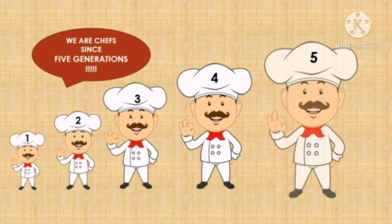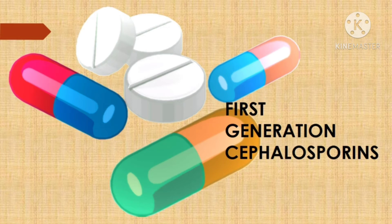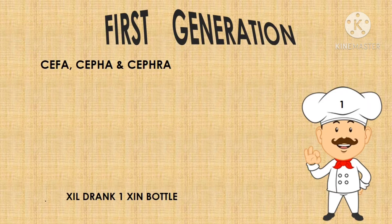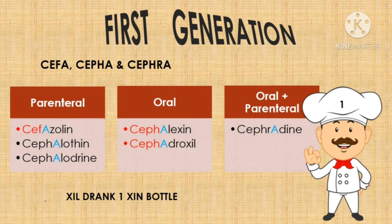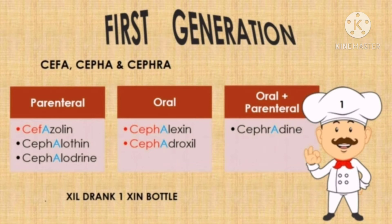Now we are going to deal with the drugs in each generation one by one. Drugs which fall under the first generation cephalosporins — their names start from either 'cef' or 'ceph', meaning the prefix 'fa', 'fa', or 'phra'. If these are present, the drug belongs to first generation. Drugs in the first generation have a vowel 'A' after 'cef' or 'ceph', and since 'A' is the first letter of the alphabet, all first generation drugs have the letter 'A' in their spellings.